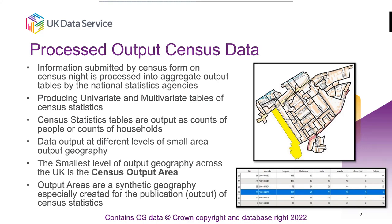What ONS produces from this data is univariate and multivariate tables of census statistics. Univariate data is a single measure about the people, and multivariate allows you to explore the relationship between different types of census data. Once processed, the census statistics are output as tables with counts of people or households. The data is output at different levels of small area output geography, the smallest of which is the census output area. Here we can see a map showing parts of Edinburgh with some census output areas and a table showing univariate statistics — each output area is a small area of geography with associated census statistics.